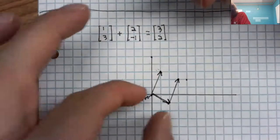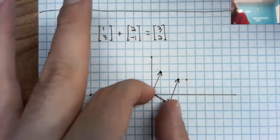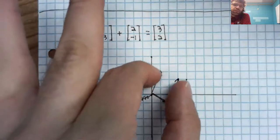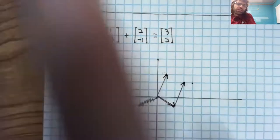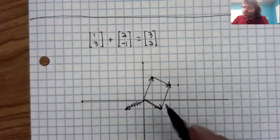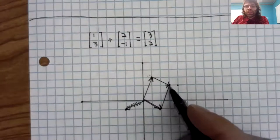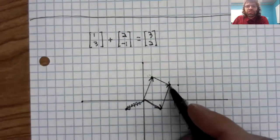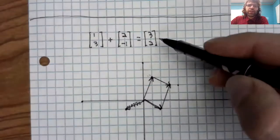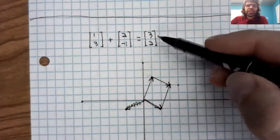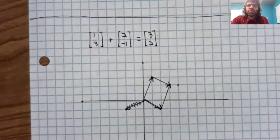And similarly, if you take this line segment and move it up here, you again wind up at this point. And where's the vector three, two? Well, it's right there.